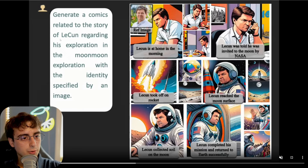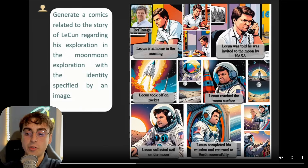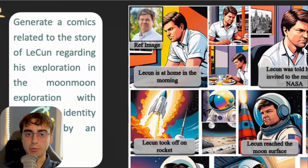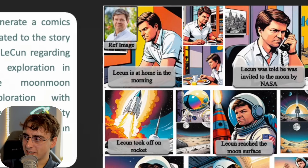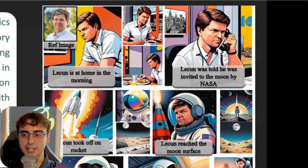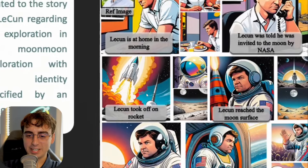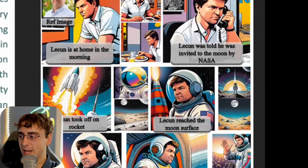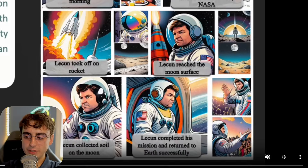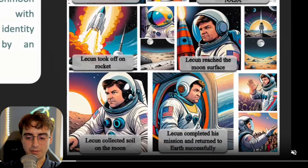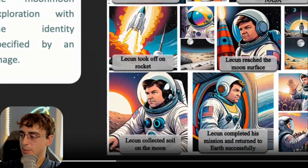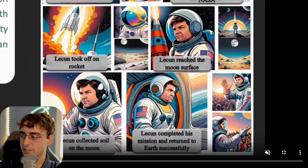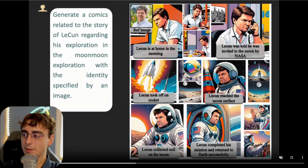This next one is a comic related to the story of LeCun and his exploration on the moon. They actually used a reference image of a real person — the developer, I believe — and turned him into this comic style. It definitely looks like the referenced character. He's at home eating breakfast, gets a phone call saying he's invited to the moon, takes off in a jet, and you can see him in a spacesuit with the same exact face, very consistent. Even the spacesuit details like the American patches and blue pieces are consistent panel to panel. This is a huge step toward consistent characters with AI image and video generation.